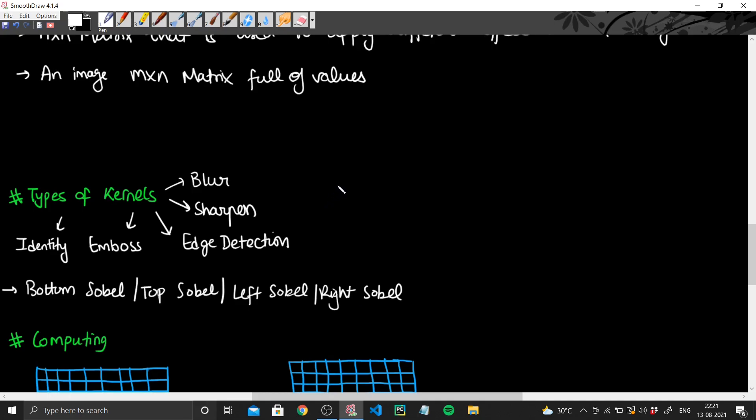These are just different types of kernels that are there. And as I said, a kernel is an n cross n matrix and generally we use 3 cross 3. The dimension is 3 cross 3, and the matrix that is standard for say this blur it is of this form.